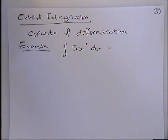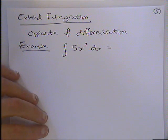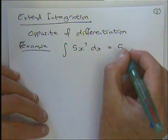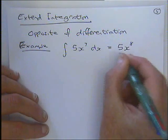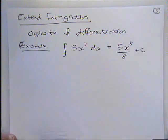Okay. Gracie. Do you want to take her answer? Okay. Yeah. 5x to the power of 8 over 8. So, Gracie, thank you very much. Gracie, in words, what did we do there in that one? We added 1 to the power. Yeah. We added 1 to the power and we divided by the new power. Okay. Right.